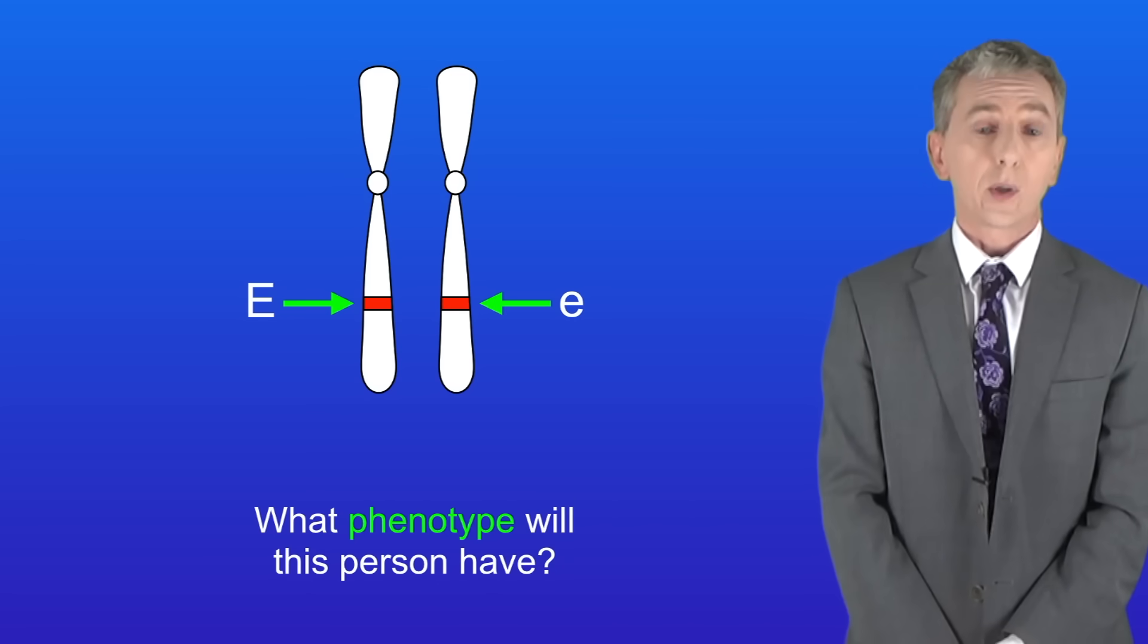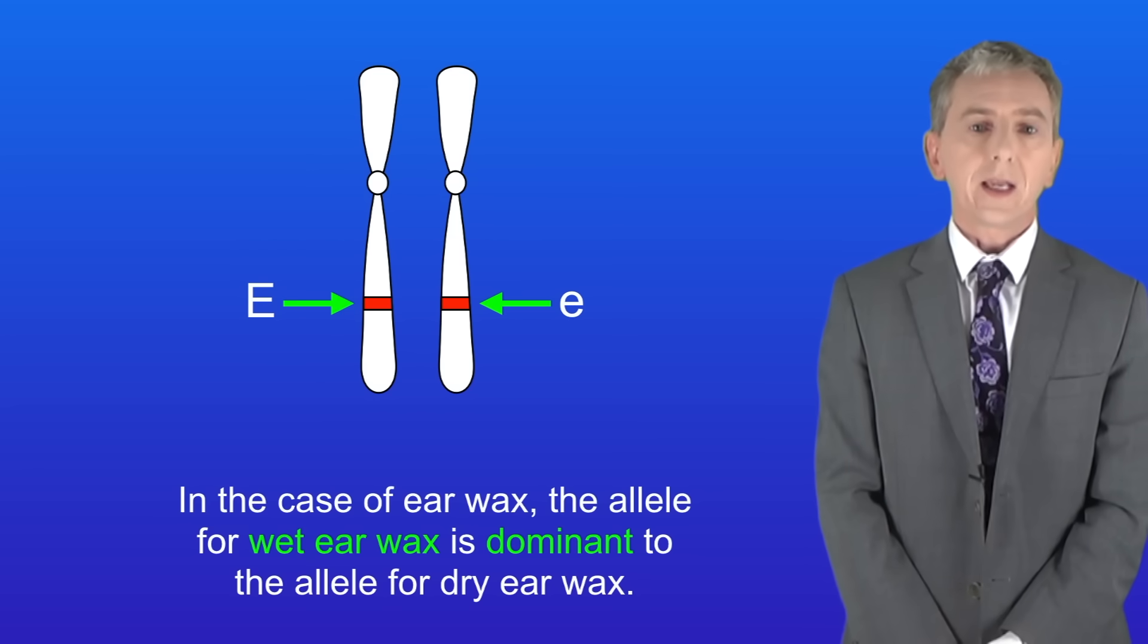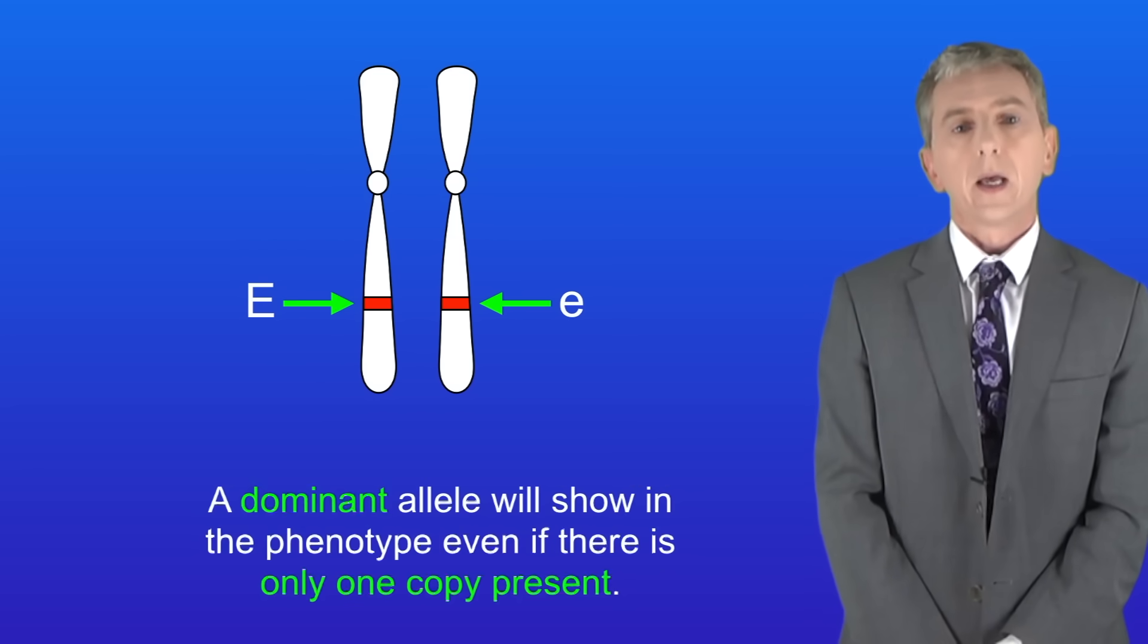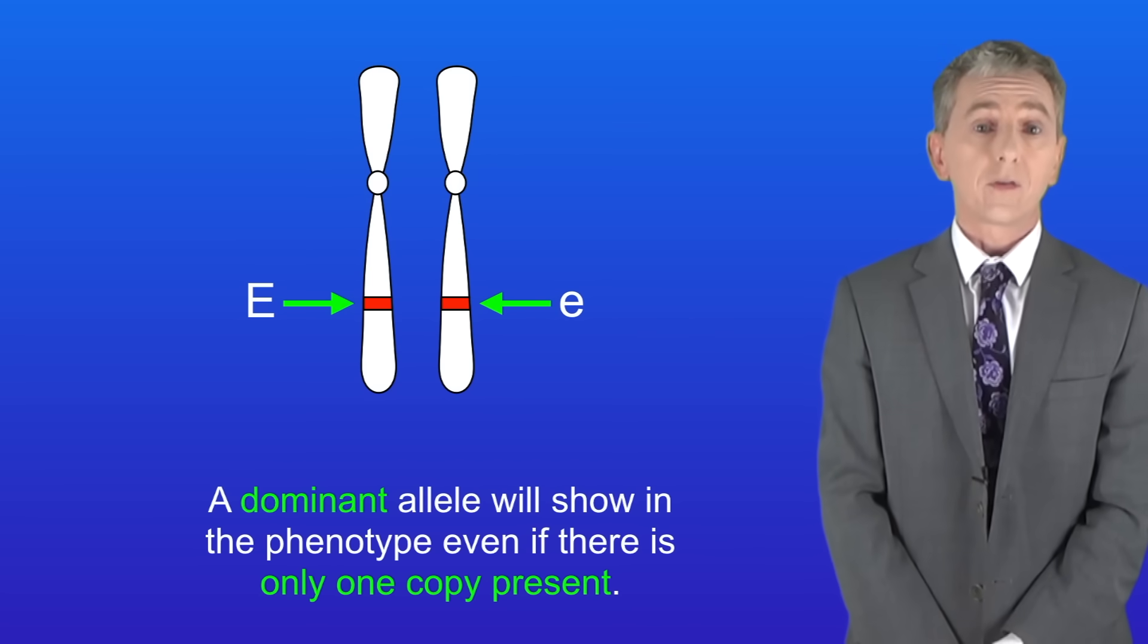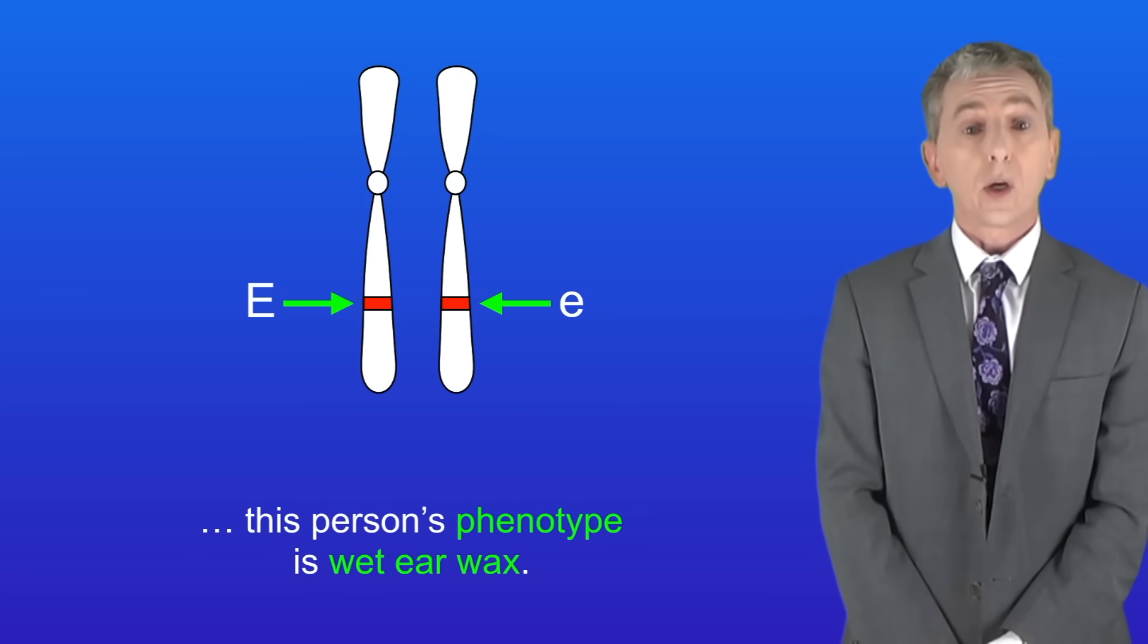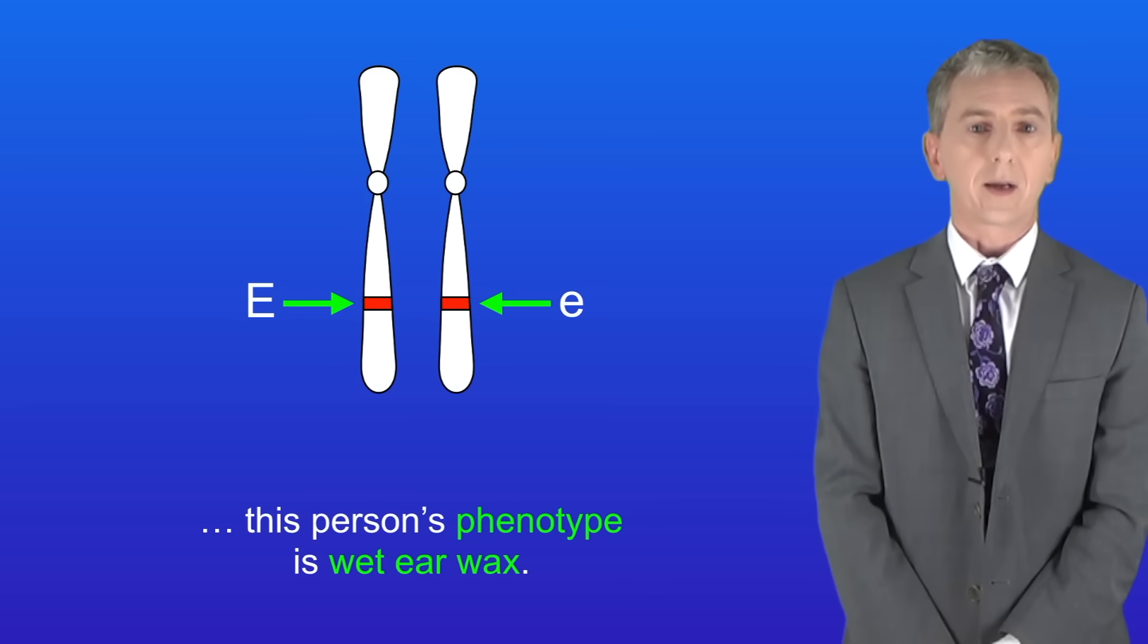So what phenotype will this person have? Well in the case of earwax, the allele for wet earwax is dominant to the allele for dry earwax. A dominant allele will show in the phenotype even if there's only one copy present. So in this case, because the allele for wet earwax is dominant, this person's phenotype is wet earwax.